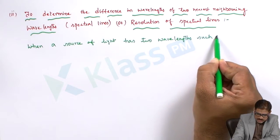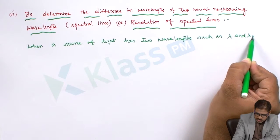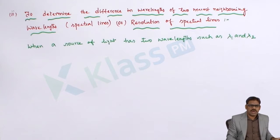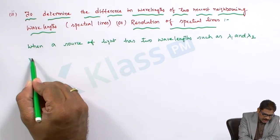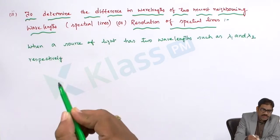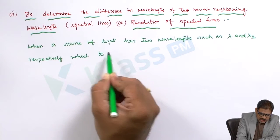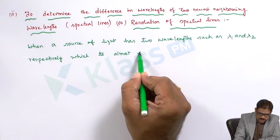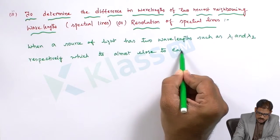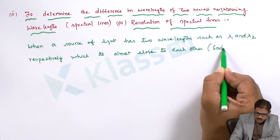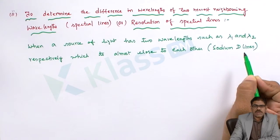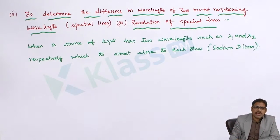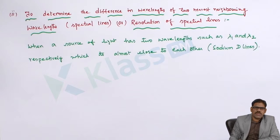When a source of light has two wavelengths such as lambda 1 and lambda 2, which are almost close to each other — just like sodium D lines — we need to verify and find the difference of those wavelengths for the corresponding light sources.